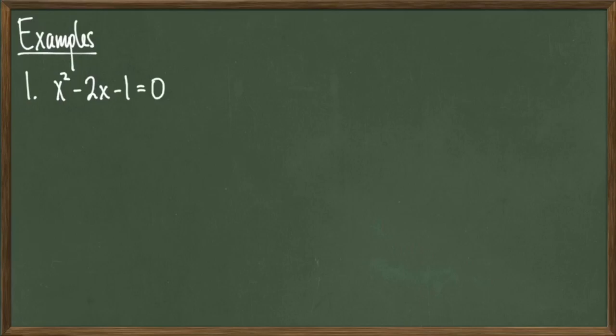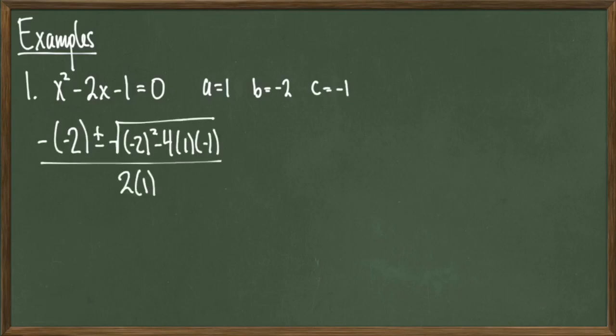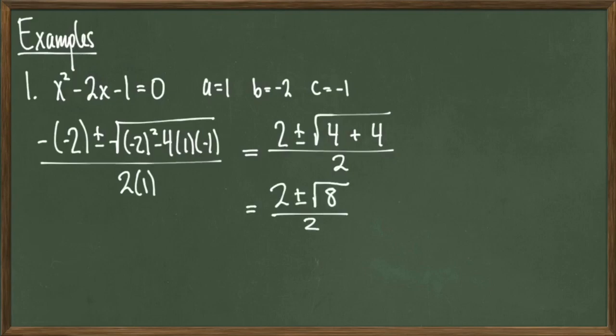Let's look at some examples of this formula in action. Consider the quadratic equation x squared minus 2x minus 1 equals 0. Once we've identified a as 1, b as minus 2, and c as minus 1, we can start plugging into the formula. Once I do that, I get minus negative 2 plus minus the square root of negative 2 squared minus 4 times 1 times negative 1 all over 2 times 1. And this simplifies down to 2 plus minus the square root of 4 plus 4 all over 2. Another round of simplification gives us 2 plus minus the square root of 8 over 2.